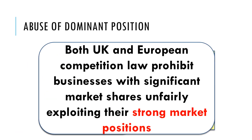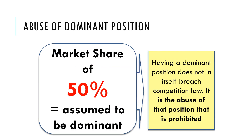Another area of competition law is abuse of a dominant position. Both UK and European competition law prohibit businesses with significant market shares from unfairly exploiting their strong market positions. You are considered to have a dominant position if you have a market share of 50% or more. However, this doesn't mean you've broken competition law — it's only if you use that dominance to abuse customers or distort competition that you would be found guilty under the law.